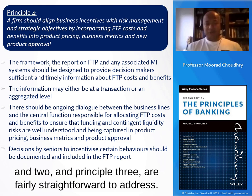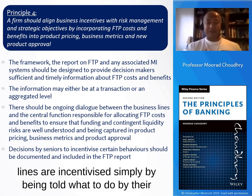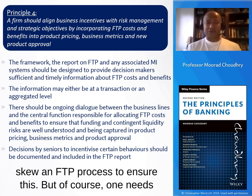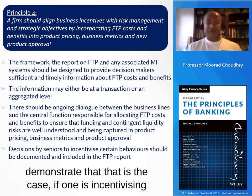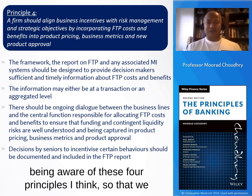Certainly principles one, two, and three are fairly straightforward to address. Principle four should have some discussion at a bank's ALCO, because it may be that business lines are incentivized simply by being told what to do by senior management. One doesn't need to skew an FTP process to ensure this, but one needs to demonstrate that that is the case if incentivizing business lines through some other mechanism. It's worth being aware of these four principles so that we have an understanding of what the regulatory approach is to review of liquidity risk management and the FTP process.